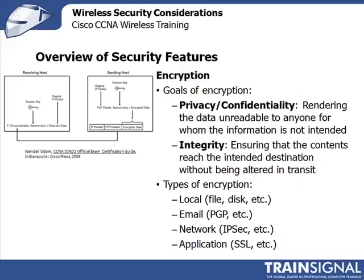Aside from authentication, authorization, and accounting, there is encryption. Encryption essentially tries to reach two goals. The first is privacy, sometimes called confidentiality — making the data unreadable to anyone for whom the message or data was not originally intended. There's also the aspect of integrity, meaning ensuring that the contents reach the destination without being altered in transit.